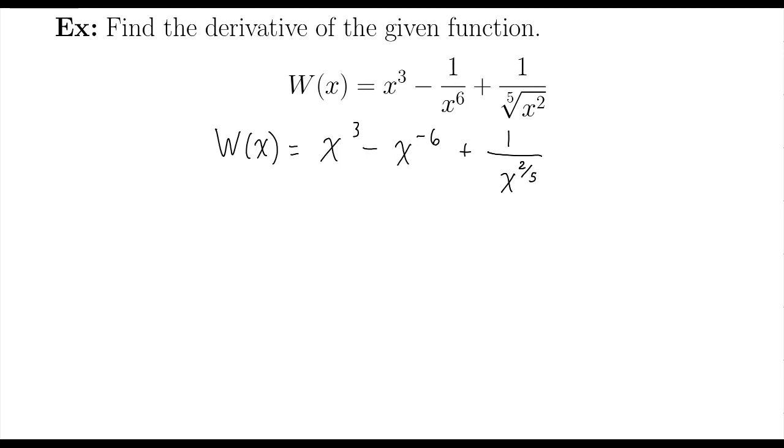Now since that's in the denominator, I need to move it up by changing the sign to a negative. So this is going to be x to the third minus x to the negative sixth plus x to the negative two fifths power.